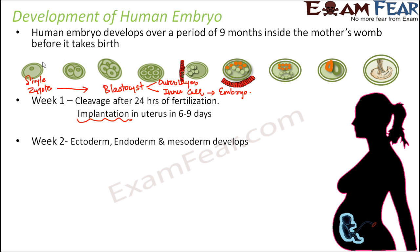Starting from a single-celled zygote, gradual mitotic divisions formed the blastocyst, which gets attached to the endometrium of the uterus. The inner cell mass undergoes further divisions to form various organs. The outer layer remains as it is, but the inner cells continue to differentiate to form ectoderm, endoderm, and mesoderm, which in turn differentiate to form various organs and ultimately the embryo.